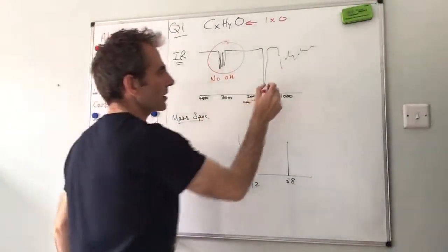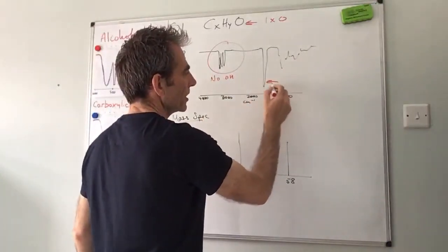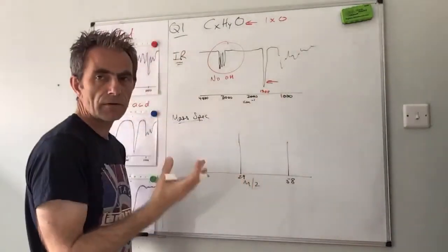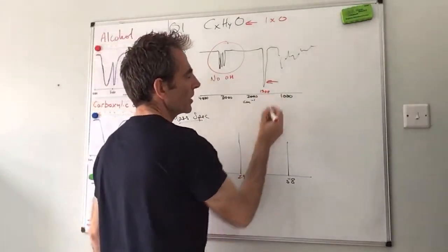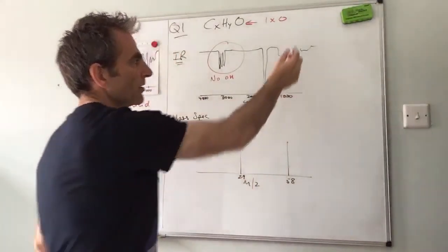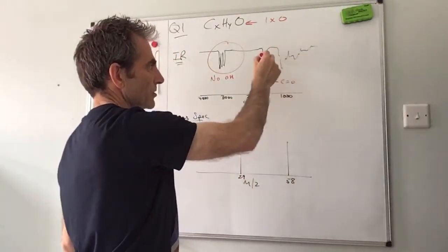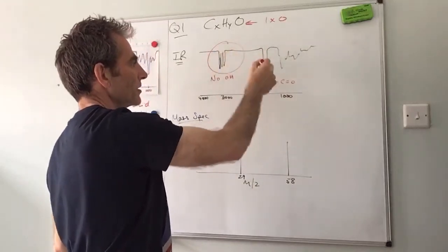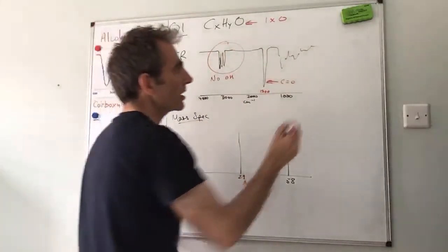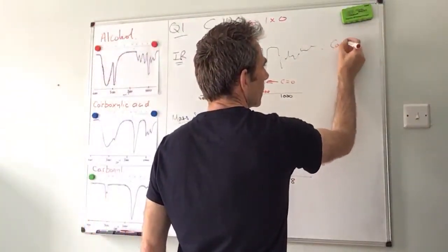So basically all I would be saying here is there's no OH. And then the other thing is this one here at about 1700, that's the number I remember - 1700 cm⁻¹ is a C=O. We're going to ignore all of that mess there, so we're just focusing on there's no OH but it has got a C=O. Therefore we're dealing with a carbonyl.